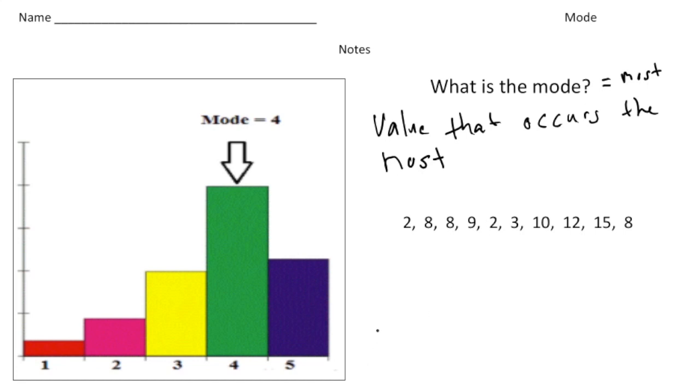Let's take a look at two examples. Here we have a histogram where we have the numbers one, two, three, four, and five, and based on this chart it appears that the number four is occurring more than any other number, right? So that means our mode is going to be four.